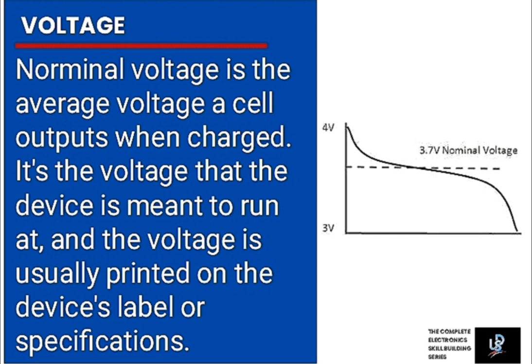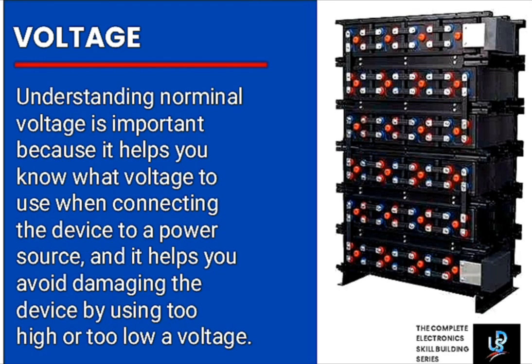A nominal voltage of a PV can be 12V but the actual operating voltage can be 17V. However, this is within the range rated at 12V. Understanding nominal voltage is important because it helps you know what voltage to use when connecting the device to a power source.